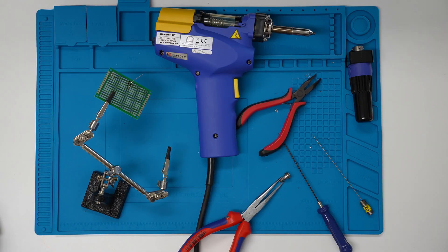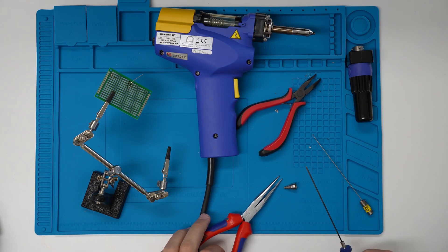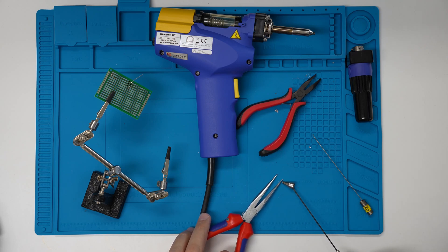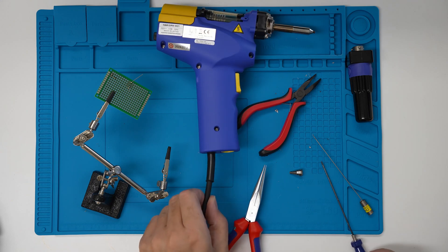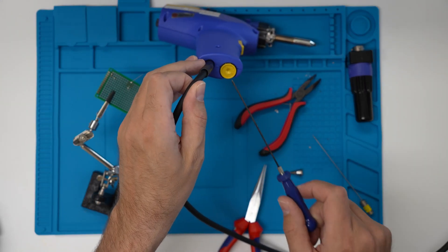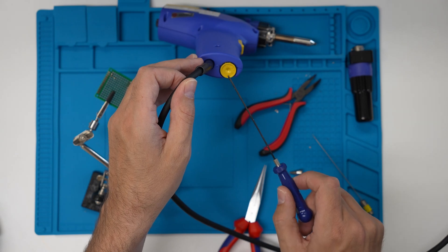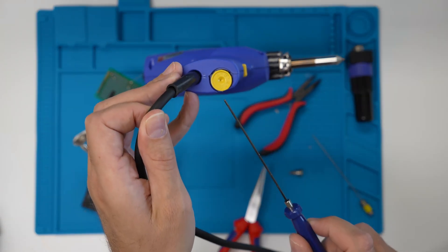Okay, so I found that the tip is really clogged here and I think what we need to do is put it back and heat it up at a higher setting than the one I'm using right now. So right now I'm using the one setting, which is the lowest setting.